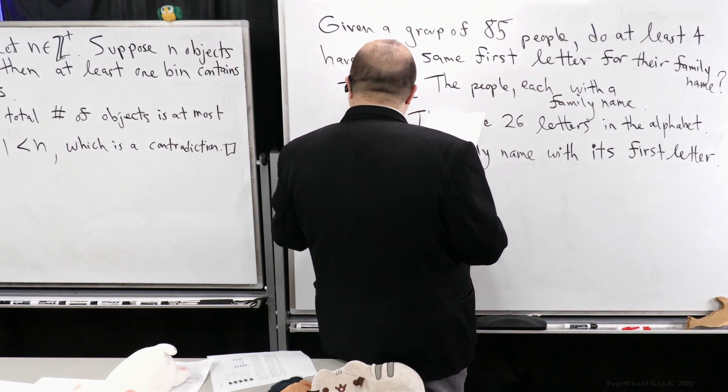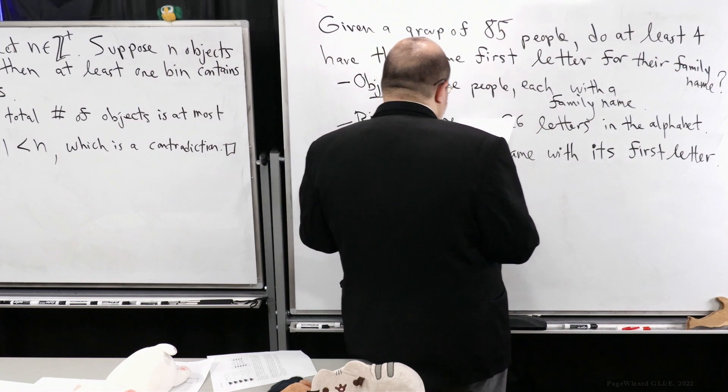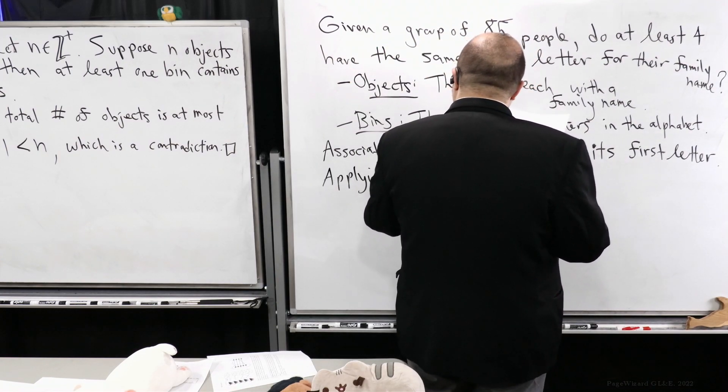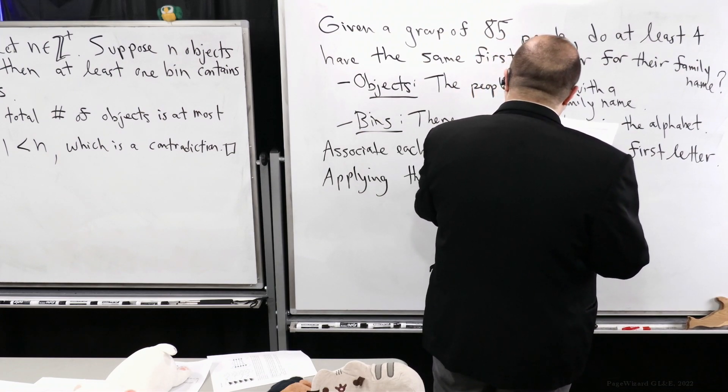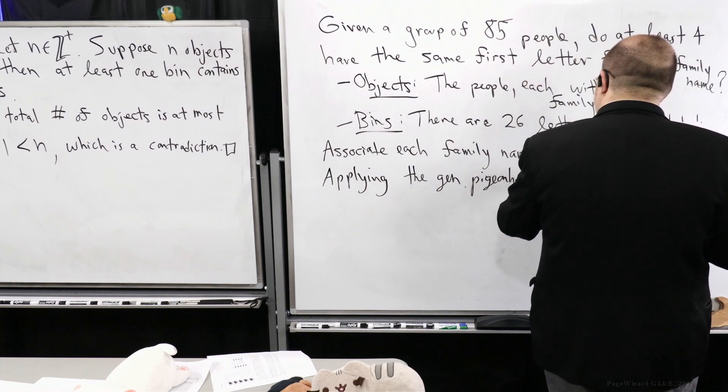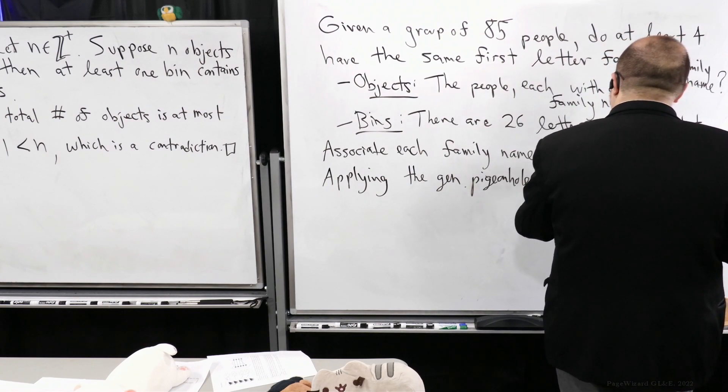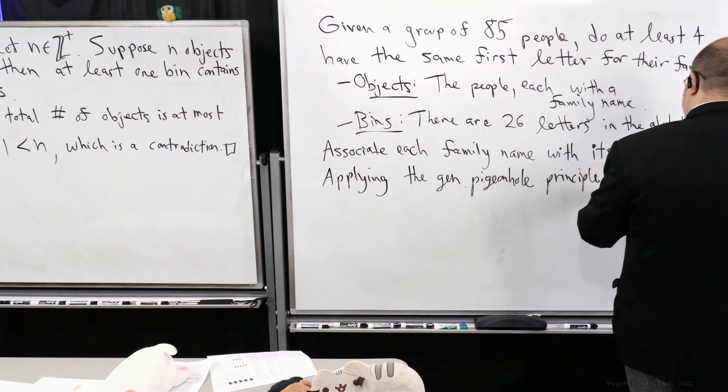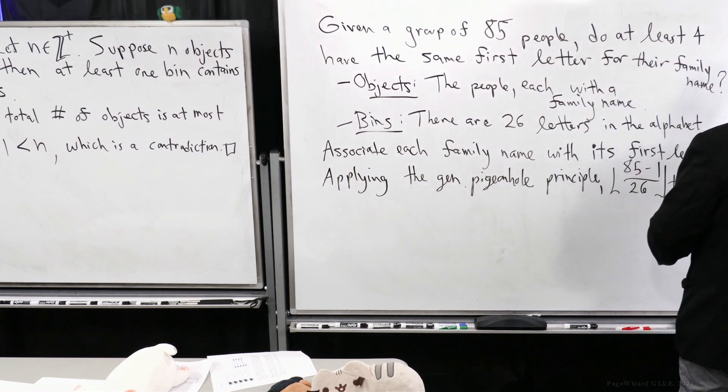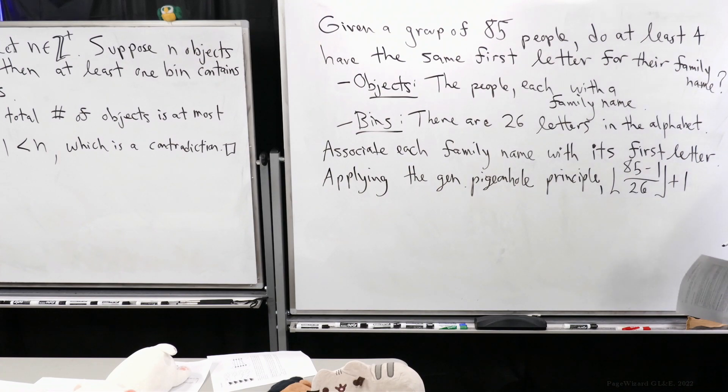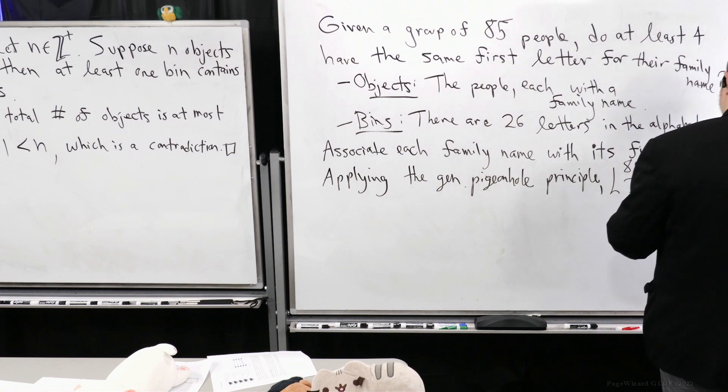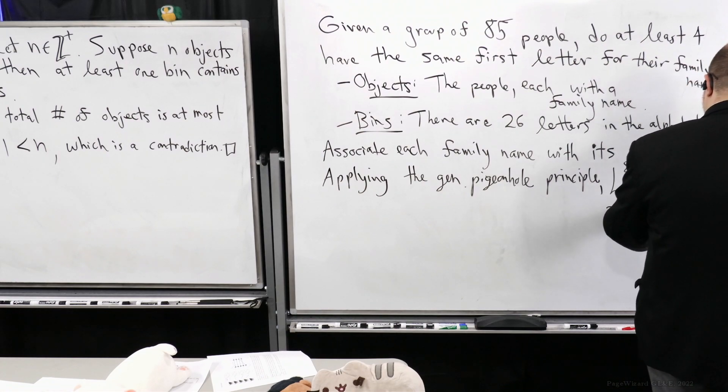Now let's use the generalized pigeonhole principle. Applying the generalized pigeonhole principle, the floor of 85 minus 1 over 26 plus 1. Now this right here is 84 over 26. If you take that and play around with this, that's already going to be bigger than 3 times 26, but it's not bigger than 4 times 26. So you're going to end up with this being 3 plus 1 which is equal to 4.